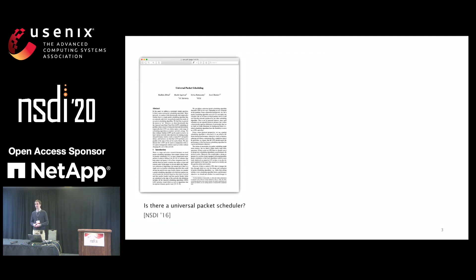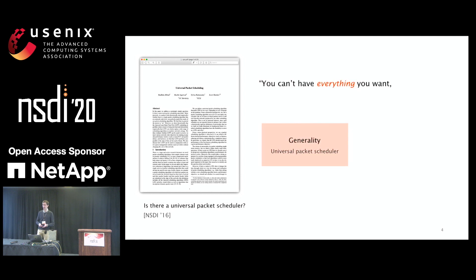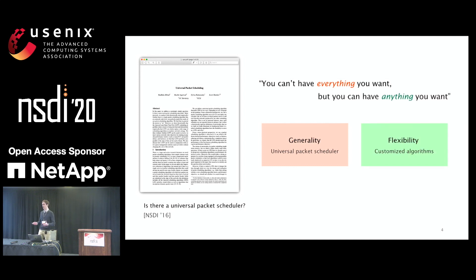Recently, an interesting question has been put on the table: whether there exists a universal packet scheduler, meaning a scheduling algorithm that can outperform all others and be used as a wildcard in any situation. The answer is no — we don't have such a universal packet scheduler. Therefore, instead of focusing on generality, what we should do is focus on flexibility — building customized algorithms that outperform in specific situations and being able to dynamically select the best algorithm depending on application requirements and traffic demands.